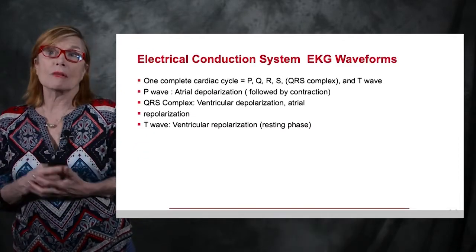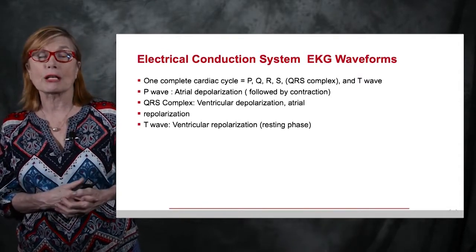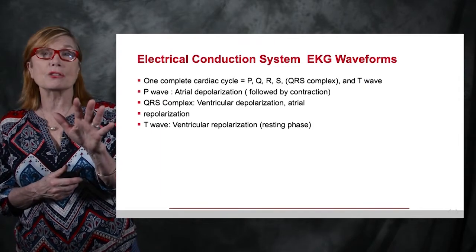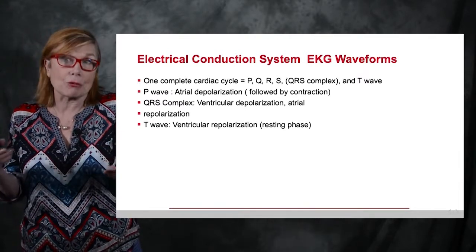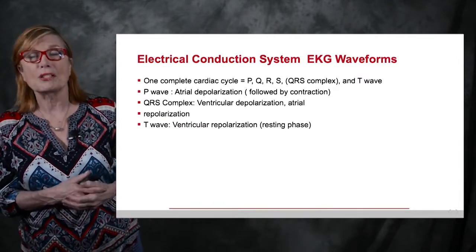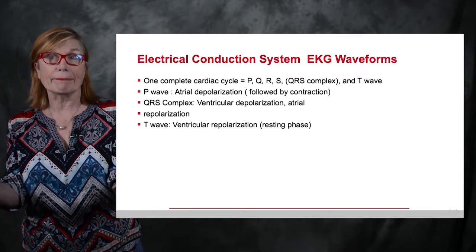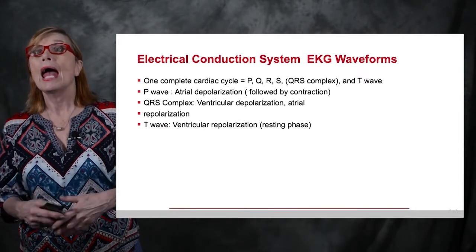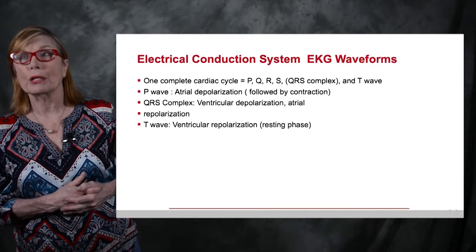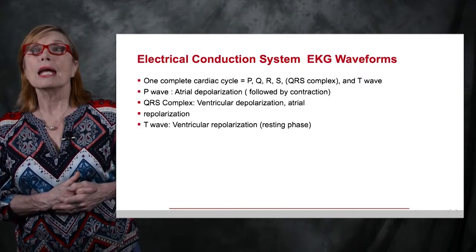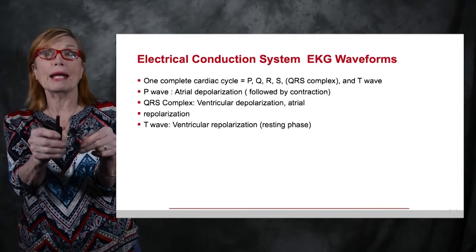The electrical depolarization of the atria followed by atrial contraction is visualized as the P wave. The P wave represents conduction through the atria, not the sinus node firing itself. The QRS complex is the symbol of electrical conduction through both right and left ventricles almost simultaneously in a normal heart, and ventricular depolarization actually obscures the visualization of atrial repolarization. Ventricular depolarization is followed by ventricular contraction, right and left simultaneously.